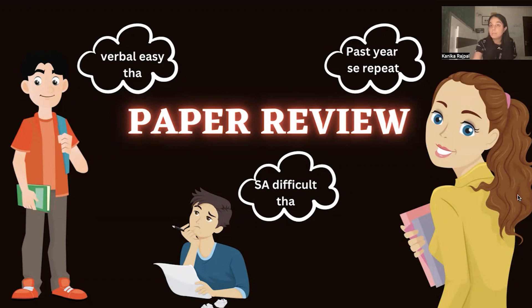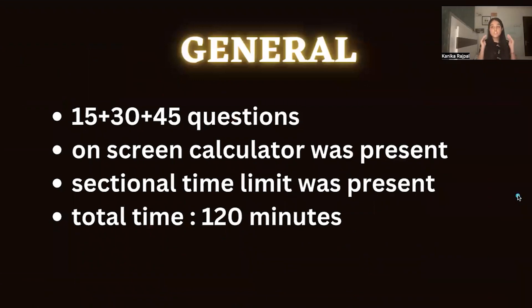Some general things that were noted: the pattern followed was 15, 30, 45, which is 15 questions of short answer, 30 questions of quant, and 45 questions of verbal ability. There was no negative marking for the first section, the short answer type questions, so plus 4 and 0 for wrong answer. For the other two sections, it was plus 4 for correct answer and minus 1 for wrong answer. So there was negative marking for the other two sections.